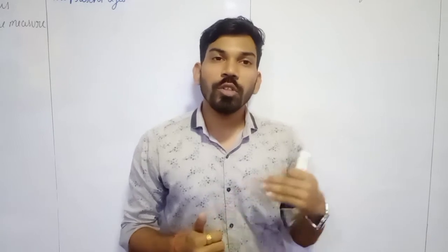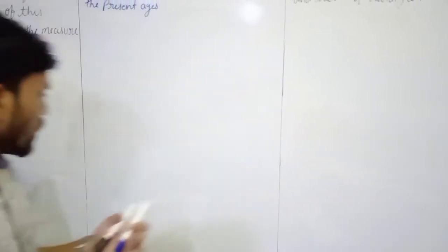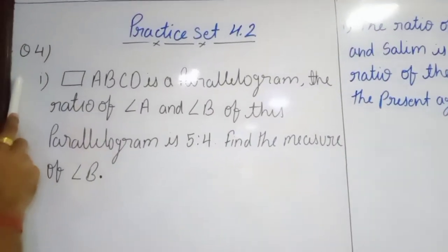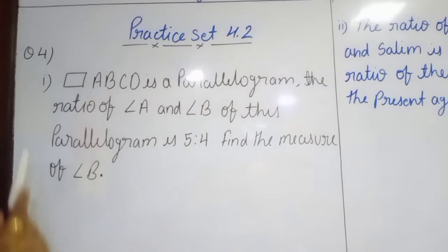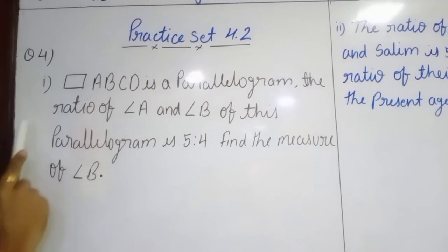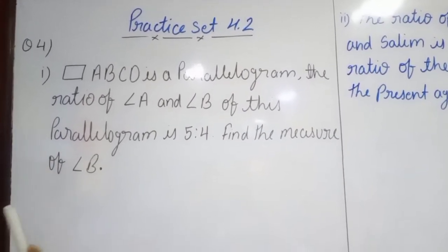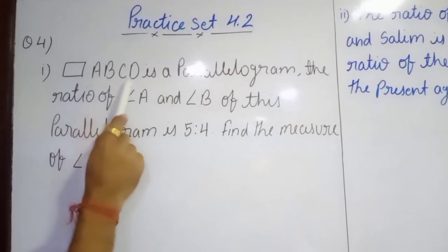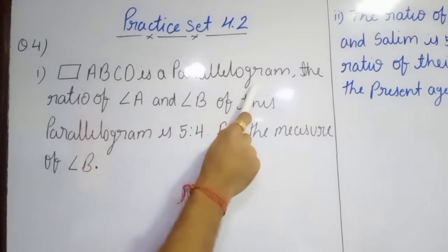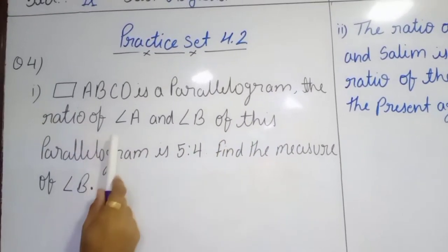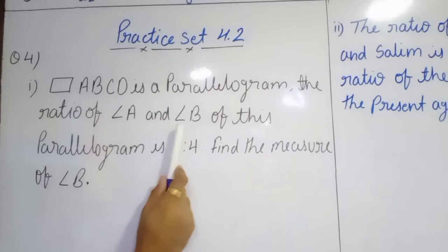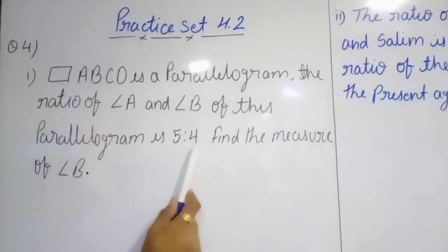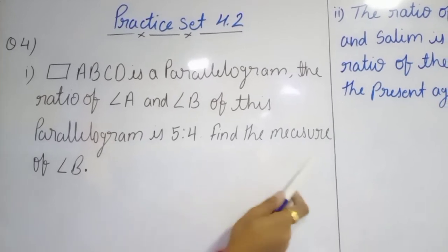So the same thing today we are going to follow. Here we have sum number 4 of practice set 4.2, and in the fourth sum we have a few word problems. The first sub-question is: quadrilateral ABCD is a parallelogram. The ratio of angle A and angle B of this parallelogram is 5 is to 4. Find the measure of angle B.